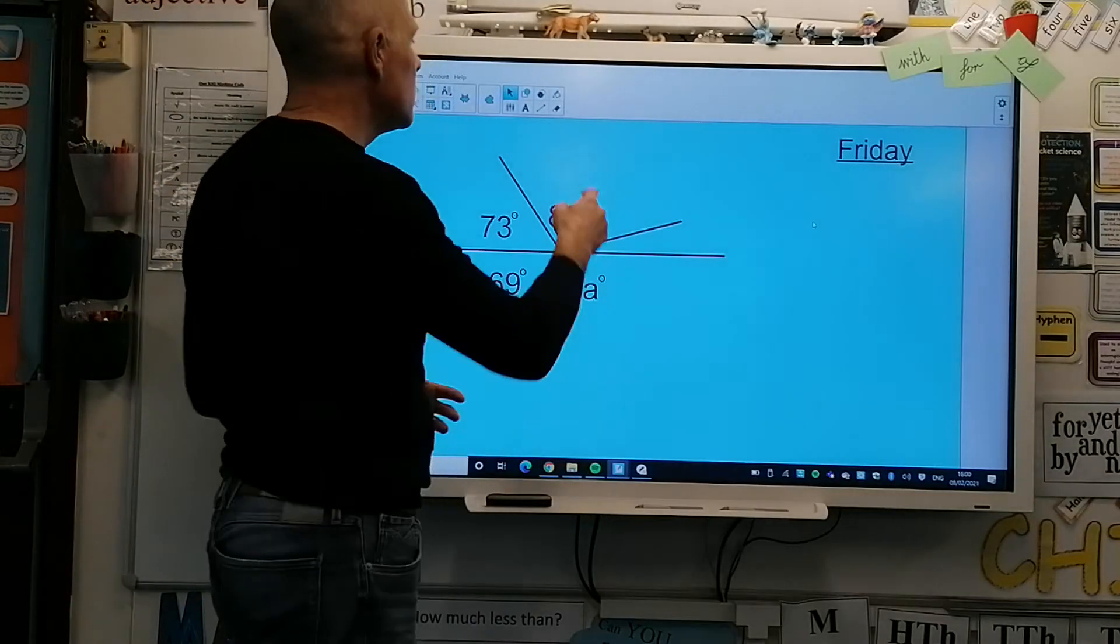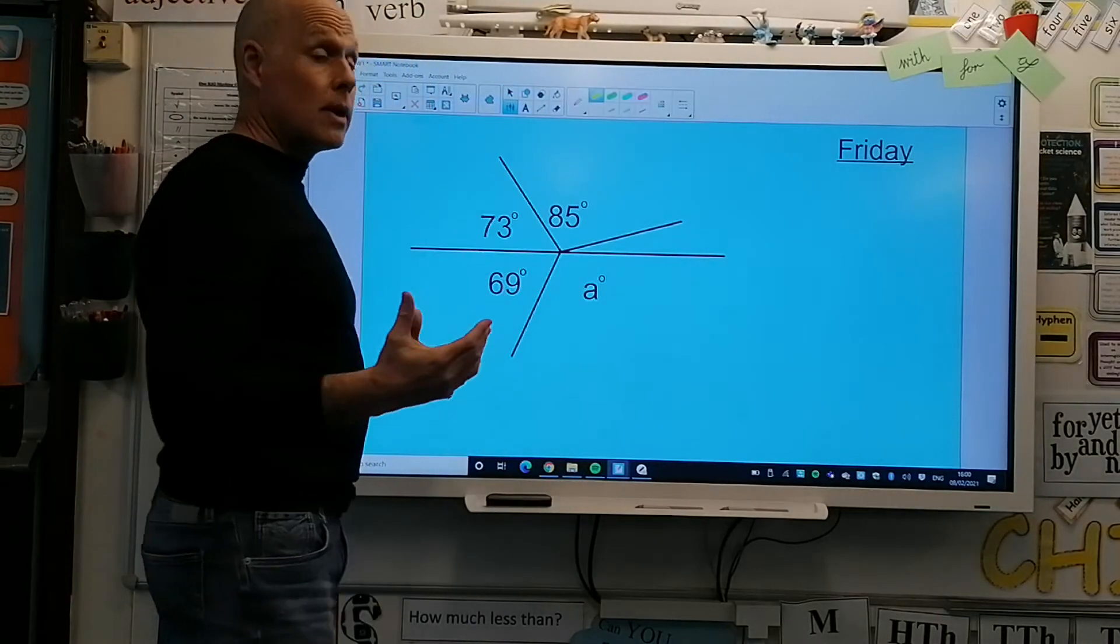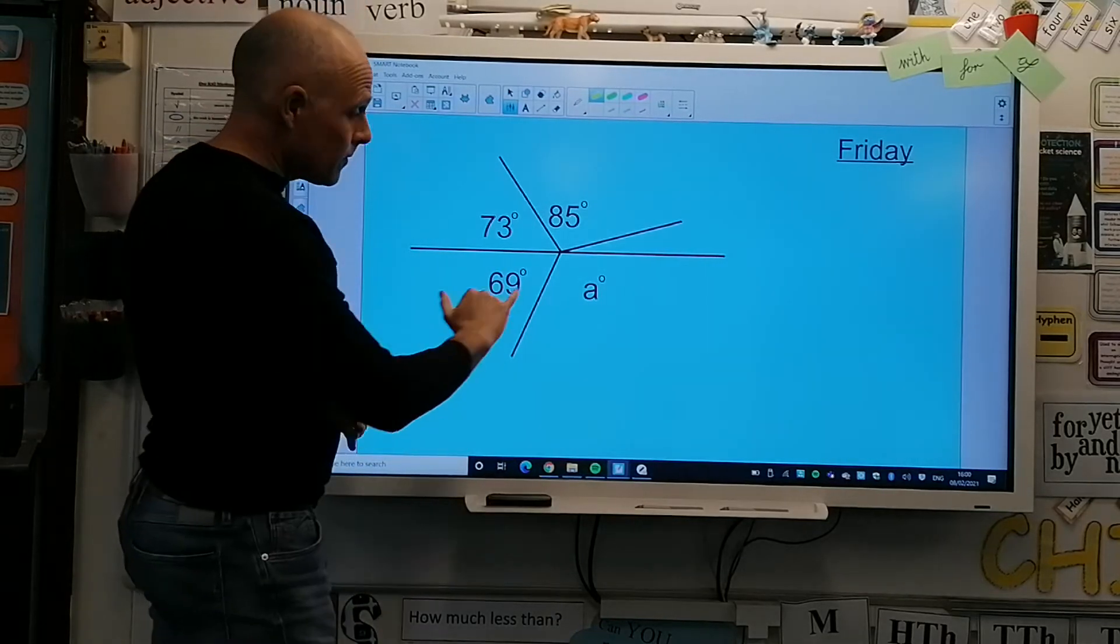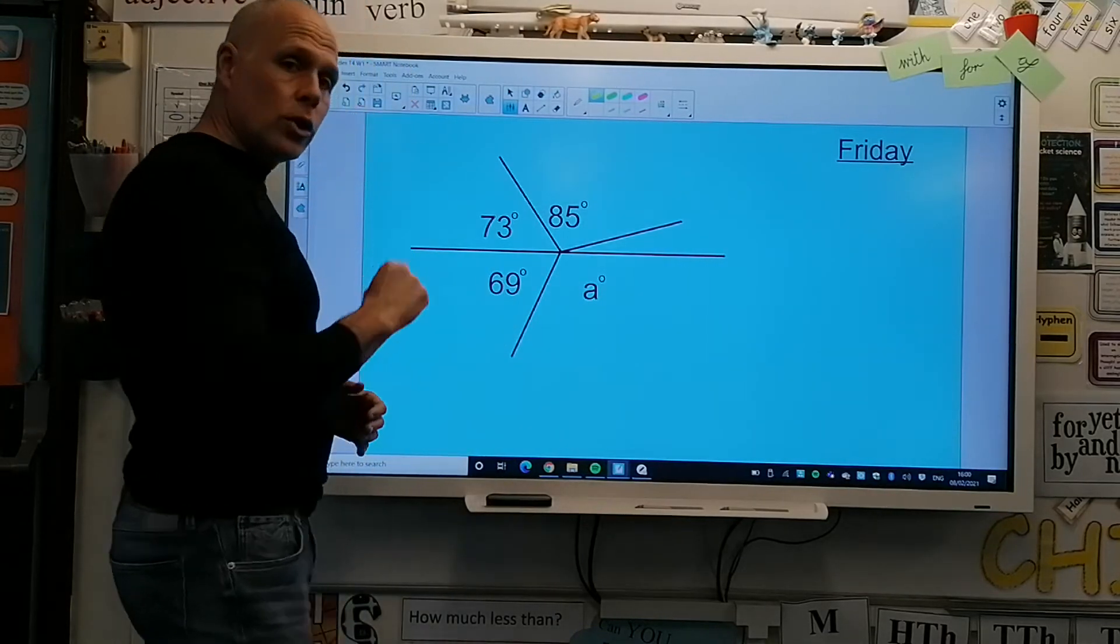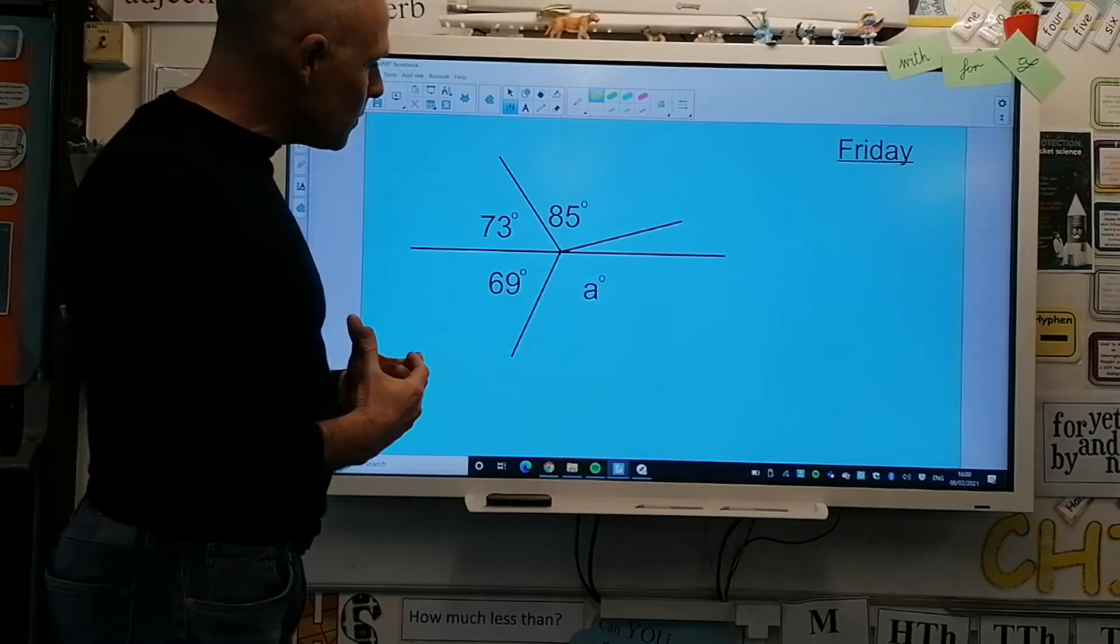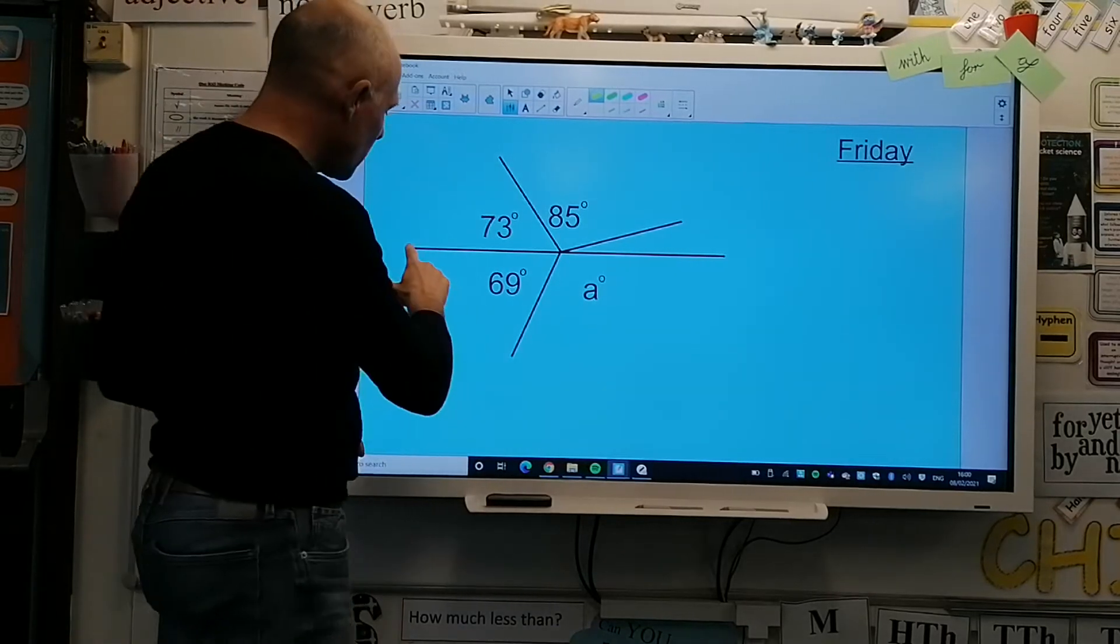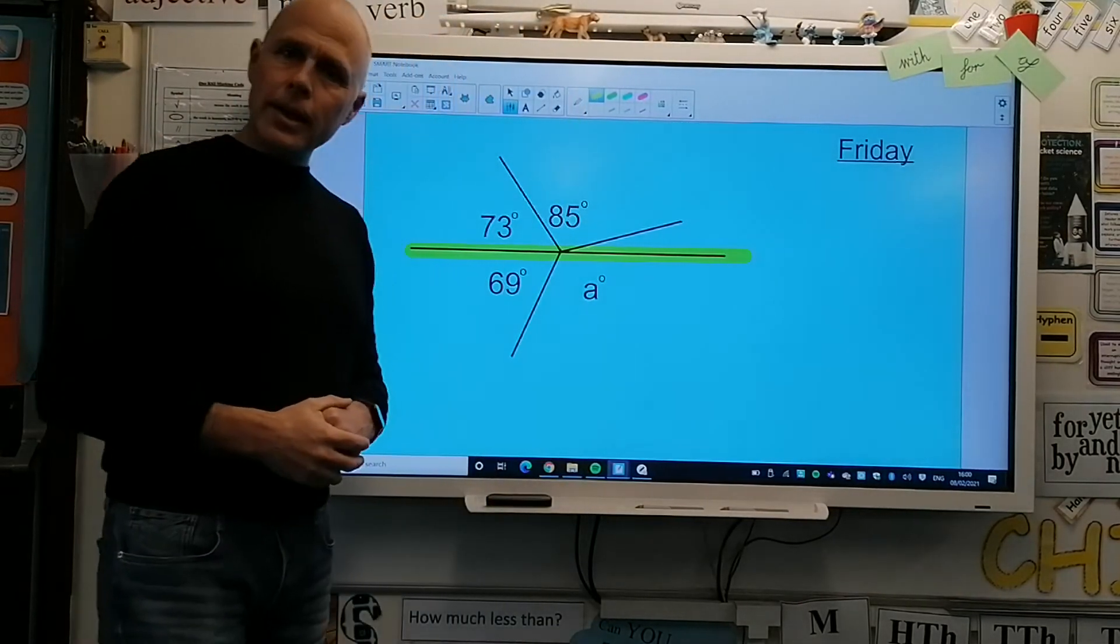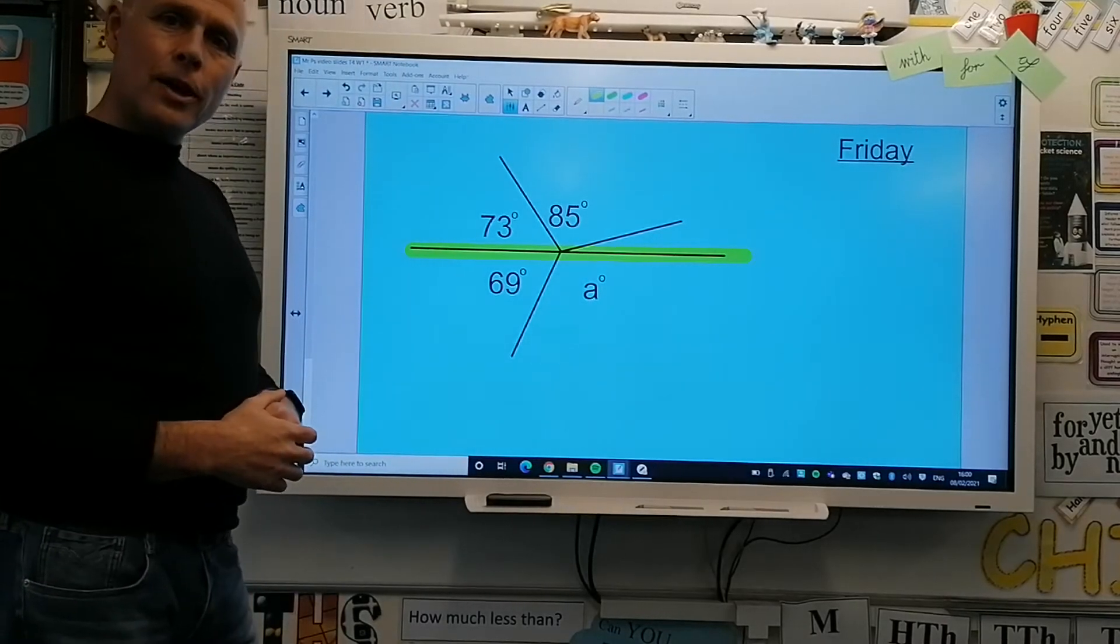got to look at what you've got and work with it. So to find angle a, you could look at the knowledge you've got and say to yourself, well actually I've got a straight line there that could help